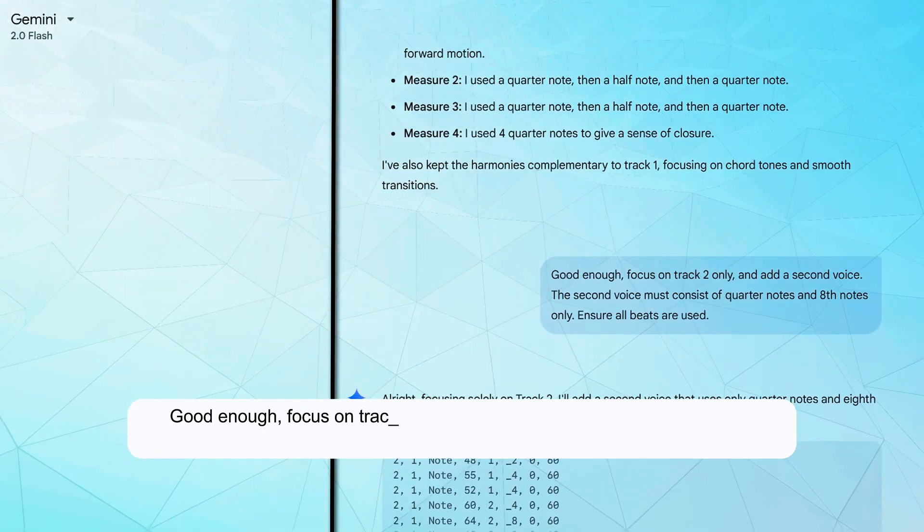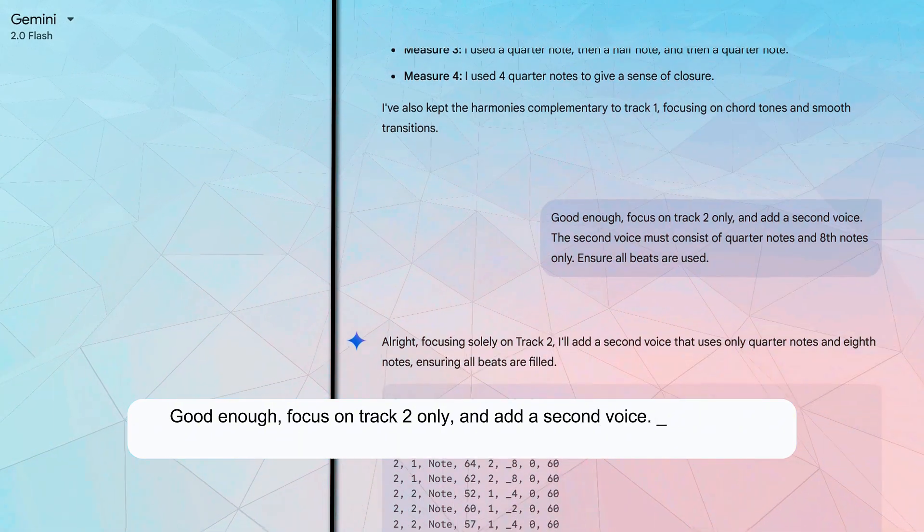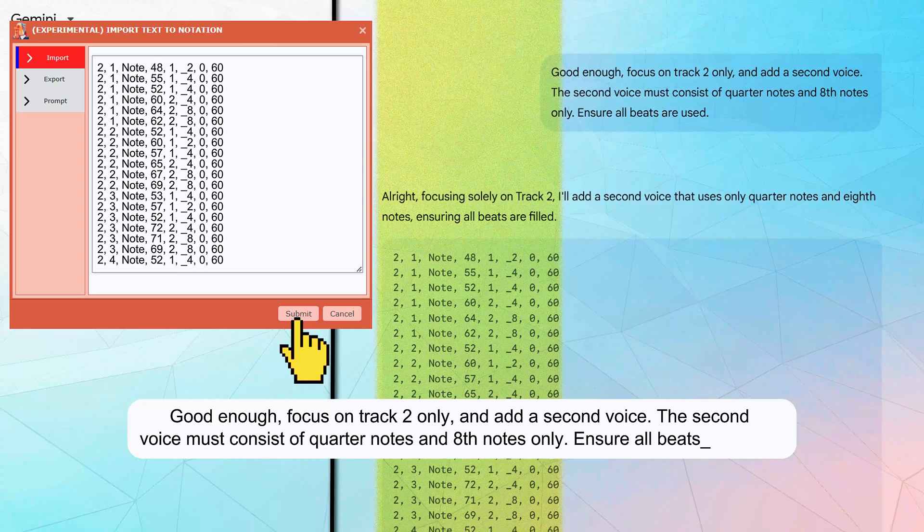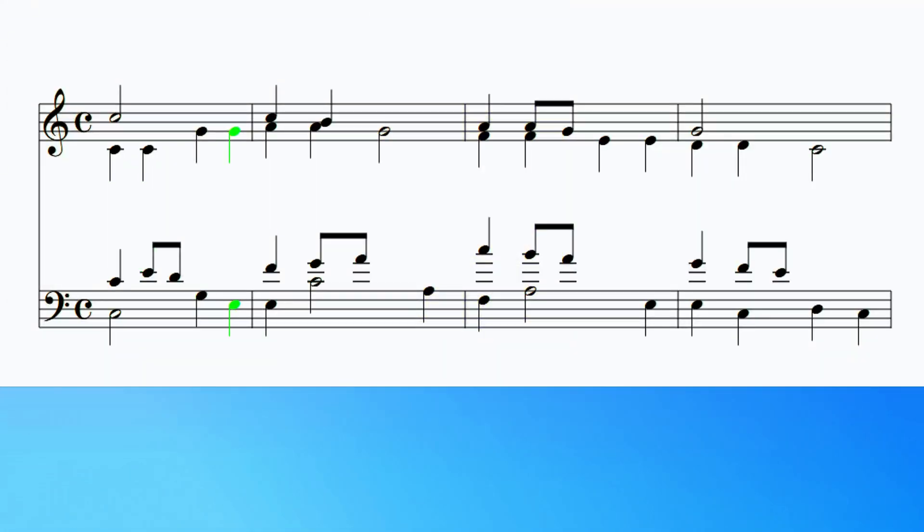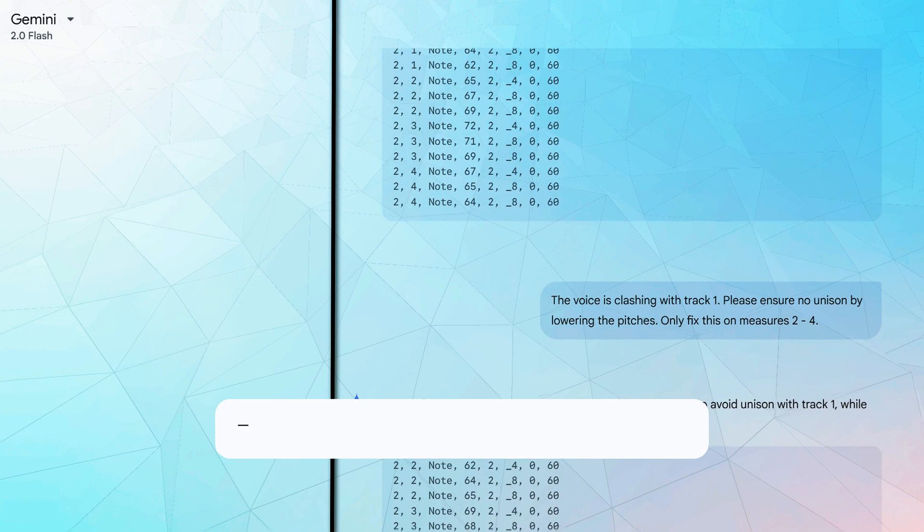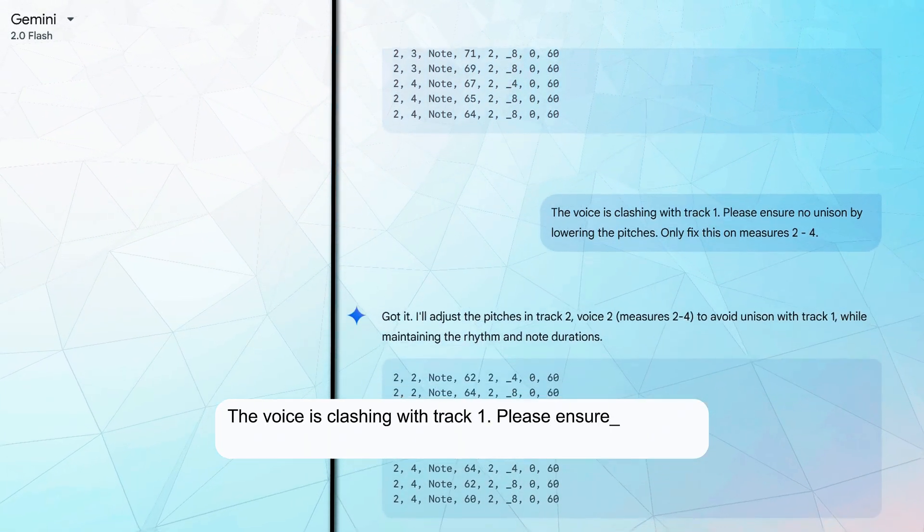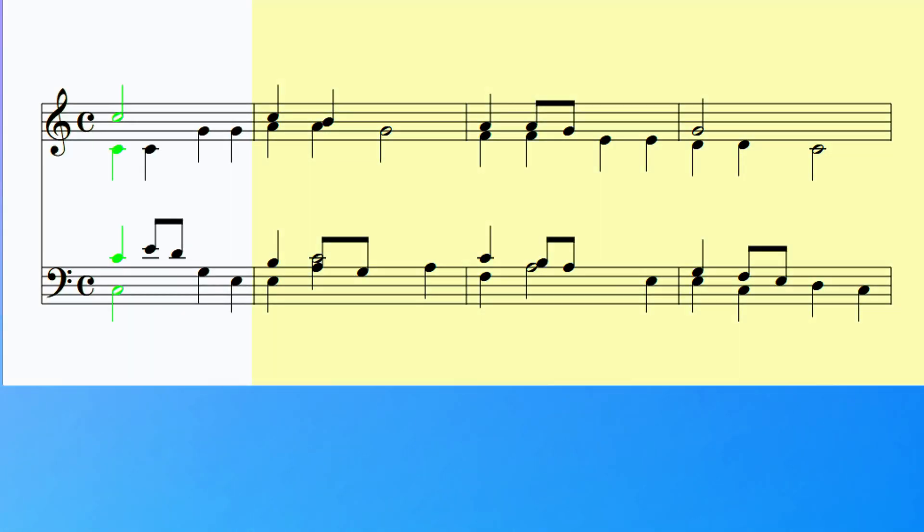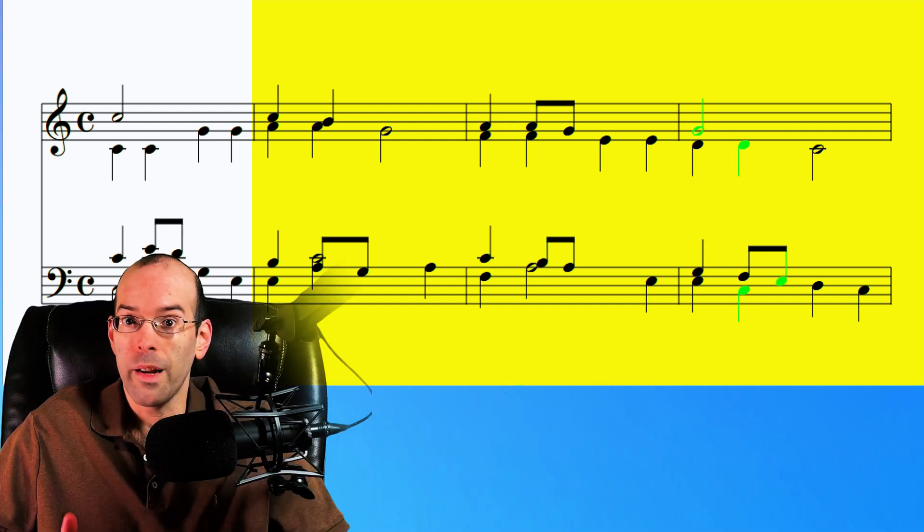But I wanted to make it a bit more interesting before converting to C minor. So I instructed this. Good enough. Focus on track 2 only, and add a second voice. The second voice must consist of quarter notes and eighth notes only. Ensure all beats are used. This is actually quite impressive. But the voice is clashing with track 1. Please ensure no unison by lowering the pitches. Only fix this on measures 2 through 4. And it actually worked.